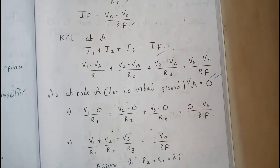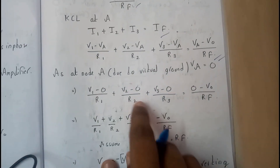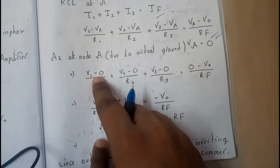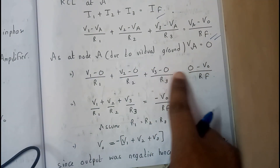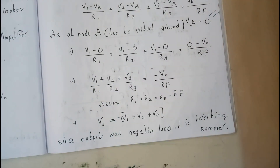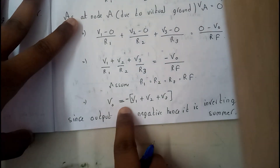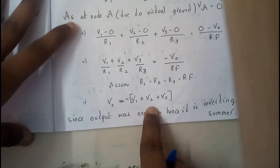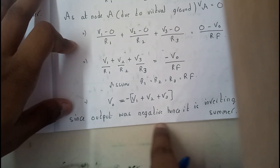From the concept of virtual ground, Va equals zero. Substituting that, we get: V1 by R1 plus V2 by R2 plus V3 by R3 equals minus V0 by Rf. Further, let us assume R1 equals R2 equals R3 equals Rf. Then we get V0 equals minus (V1 plus V2 plus V3).